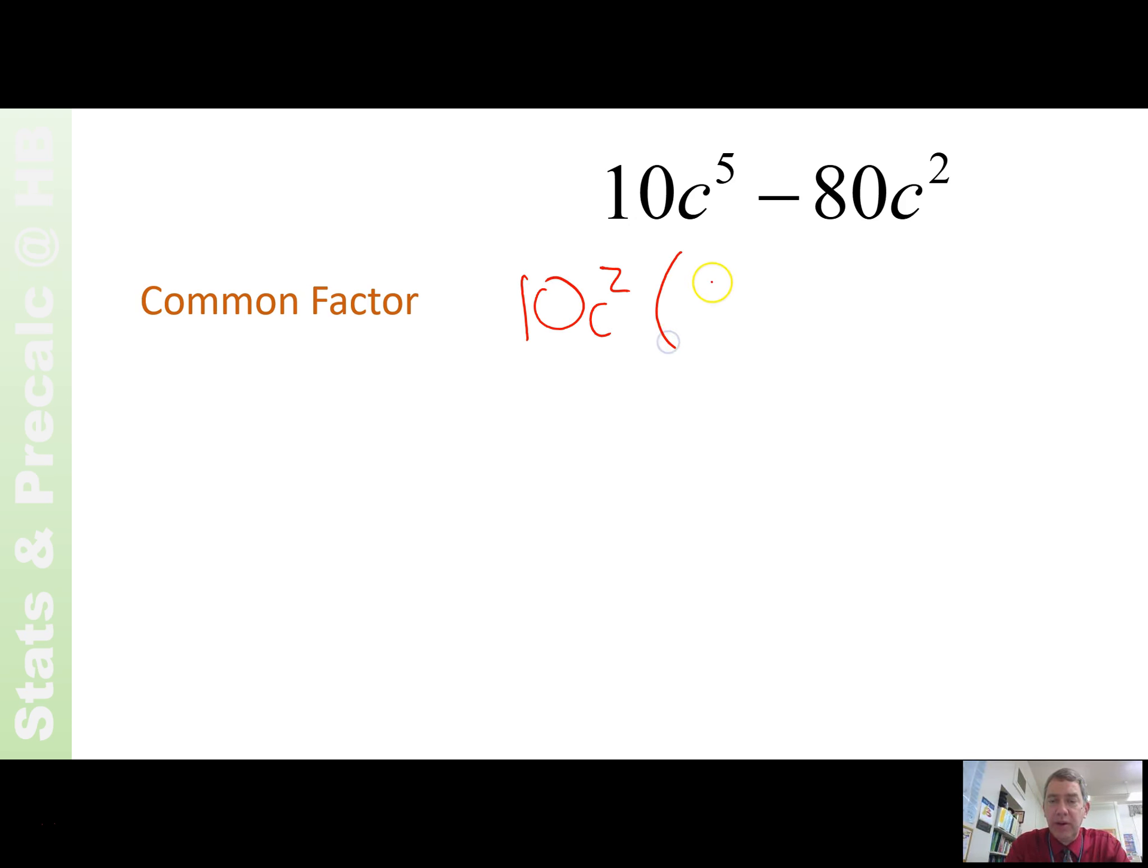If we pull out 10c squared, we're left with c cubed minus 8. You recognize that you can't do anything more with 10c squared, but c cubed minus 8 is a difference of cubes.